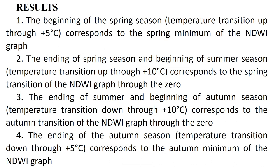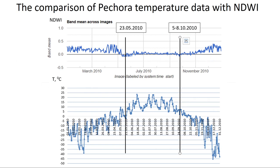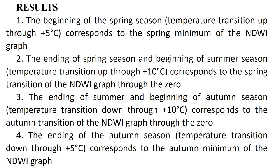By drawing the parallel on the graph, we can see that around 5th or 10th of June the summer begins. The beginning of summer by the temperature graphic is when temperature rises above 5 degrees; looking at the NDWI, the index reaches its minimum at the start and end of the growing season, and the beginning and end of summer are calculated where the NDWI graph crosses zero.